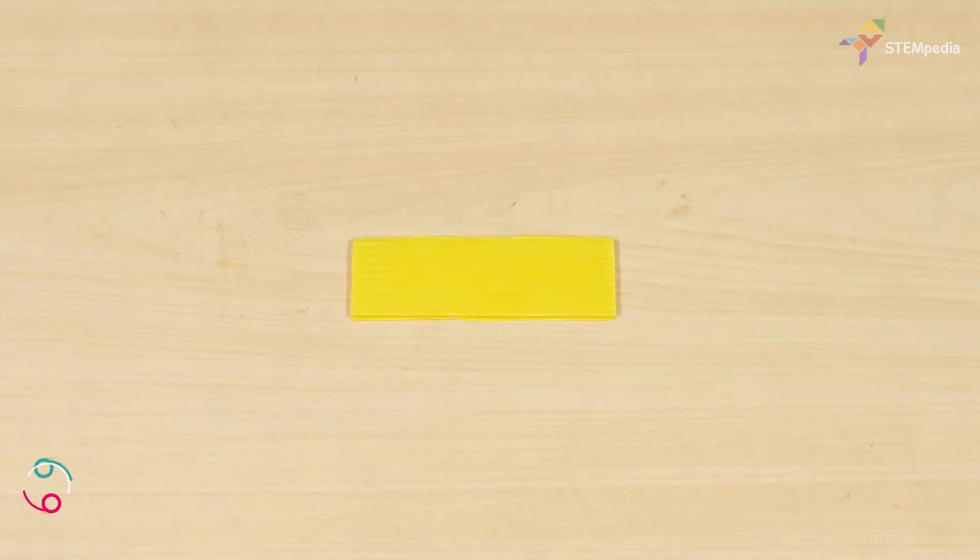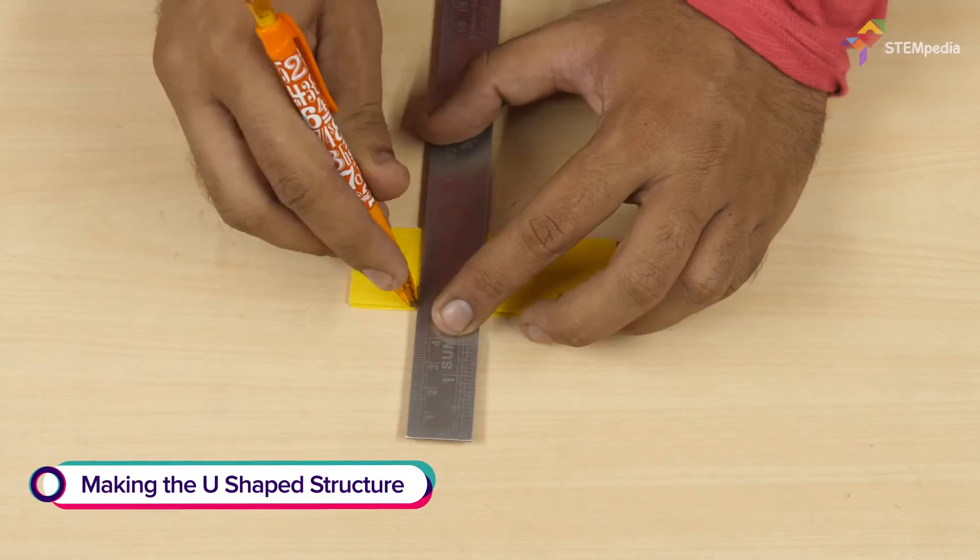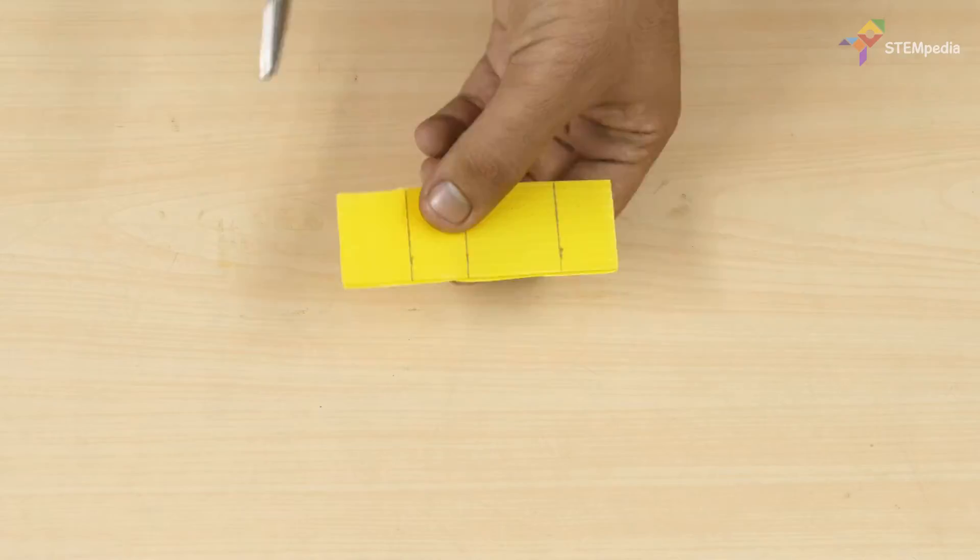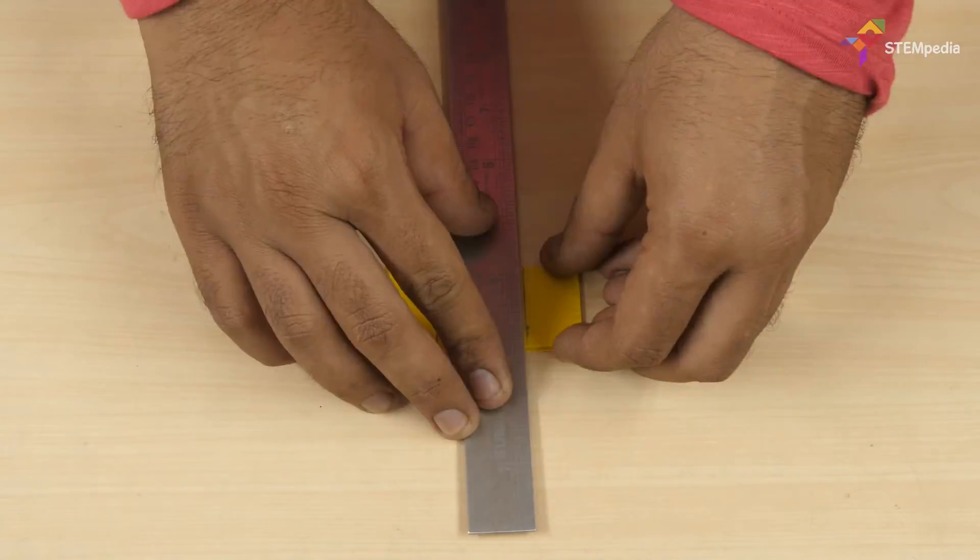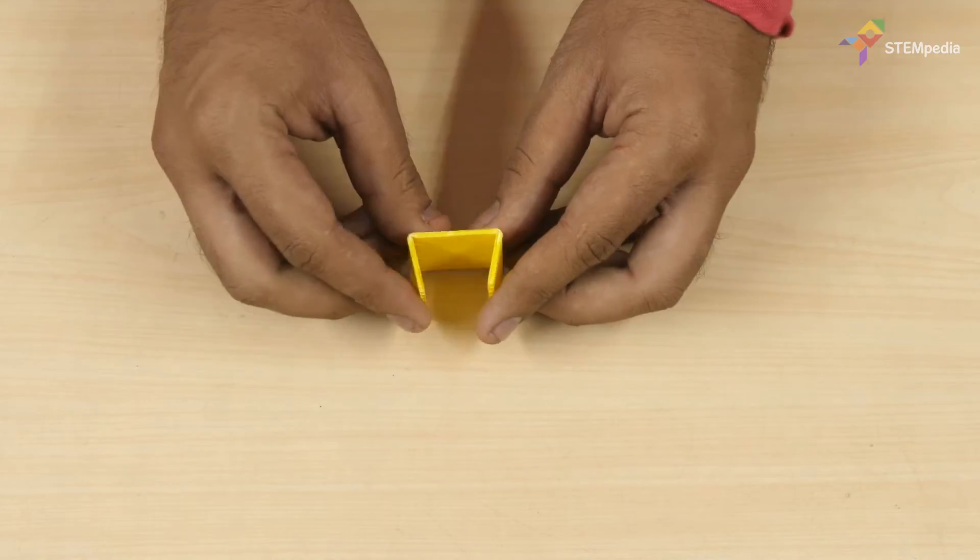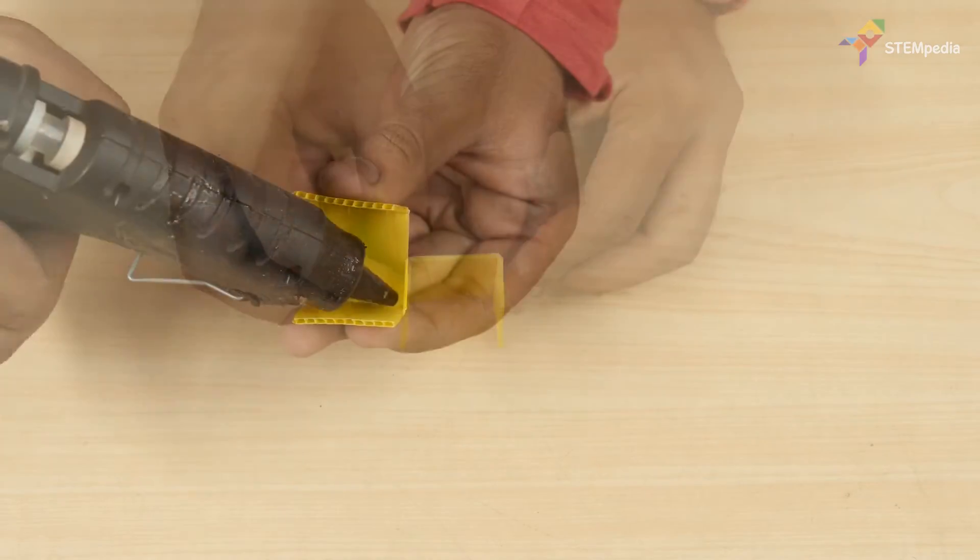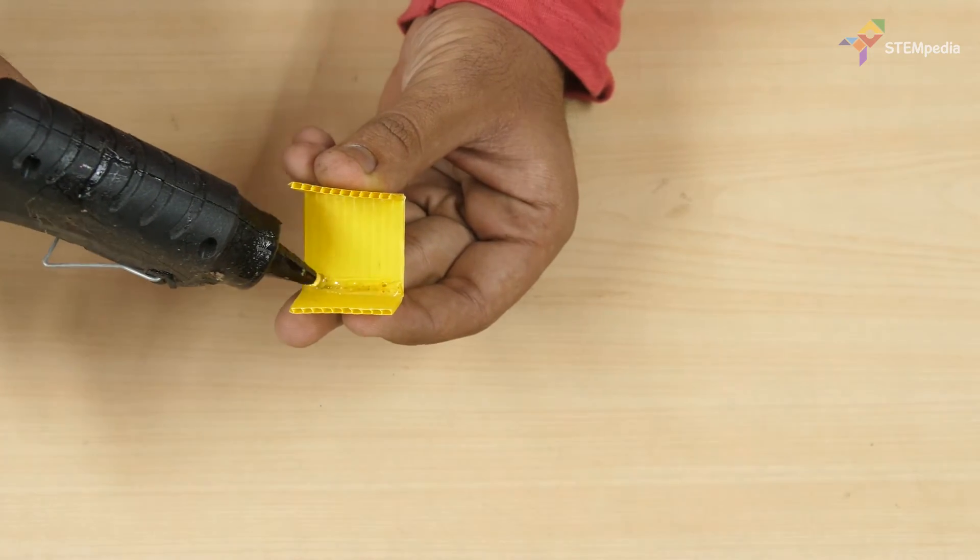Take a small strip of yellow corrugated sheet and fold it such that it forms a U-shaped structure. This will act as a part of the interlocking mechanism of the box.